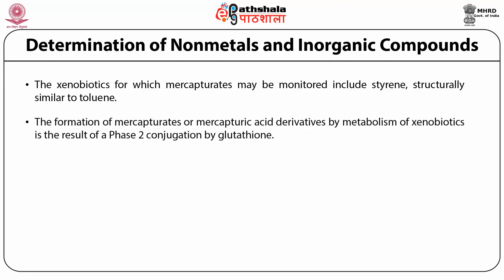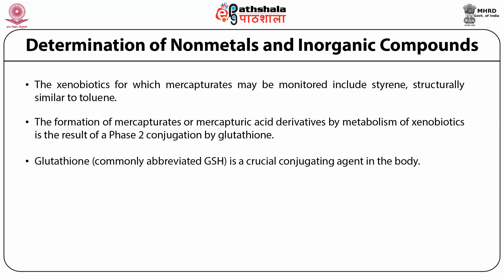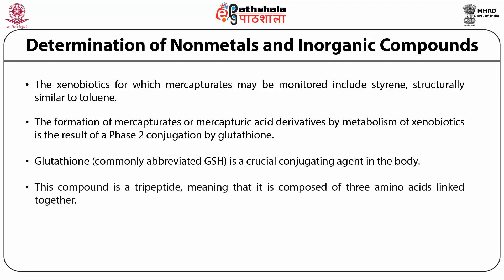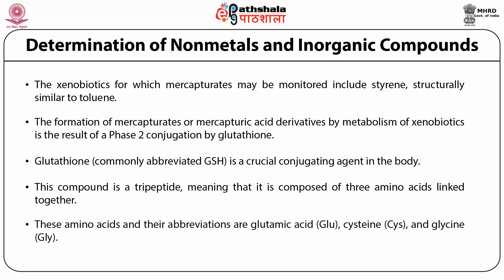The formation of mercapturates or mercapturic acid derivatives by metabolism of xenobiotics is the result of phase 2 conjugation by glutathione. Glutathione, commonly abbreviated as GSH, is a crucial conjugating agent in the body. This compound is a tripeptide, meaning it is composed of three amino acids linked together: glutamic acid, cysteine and glycine.